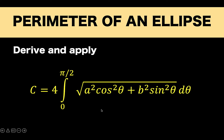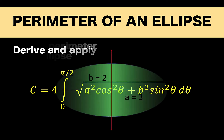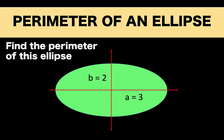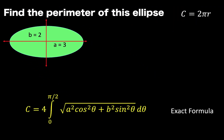Here's the formula: C equals 4 times the definite integral from 0 to pi over 2 of the square root of a squared times cosine squared theta plus b squared times sine squared theta d theta. In this lesson, we are going to do two things: first, we are going to derive the formula, and second, we are going to look at other formulas that can approximate the perimeter of an ellipse.